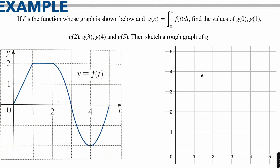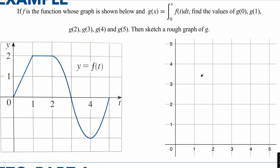For example, let's say you had a function whose graph gives g equal to the integral from zero towards x of some function of t. We're going to find the following values and then sketch a graph of g. We're going to find the area under the curve. Starting with g of zero — there is no area under this curve, so it is automatically going to be zero.